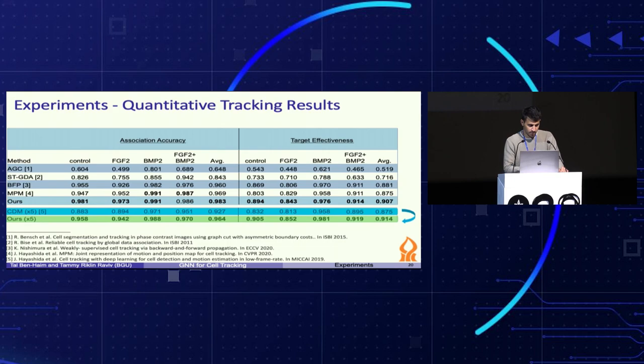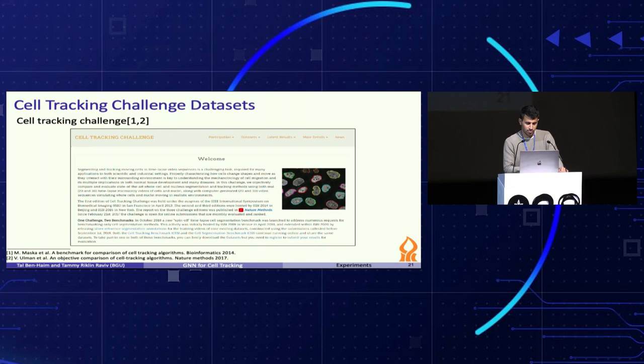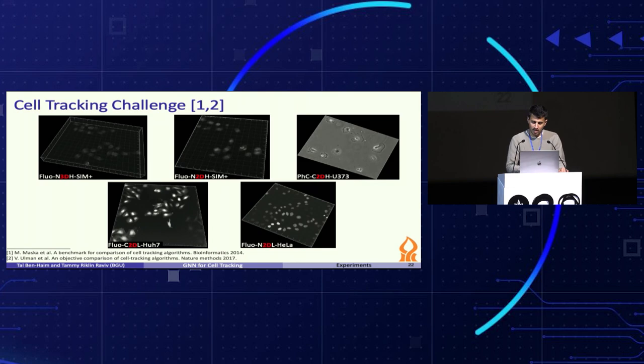We also participated in the Cell Tracking Challenge. This challenge is an objective way to explore our tracking results, where participants submit results for test data and their code. The challenge organizers reproduce the results using the code and evaluate them against challenge metrics. We submitted our results for five very different datasets, including 2D and 3D datasets. Our method was ranked in the top four for all submitted datasets. In three datasets, we ranked first, and in another one, we ranked second.